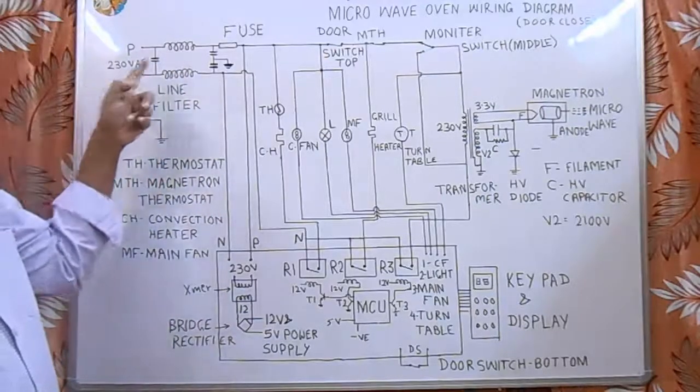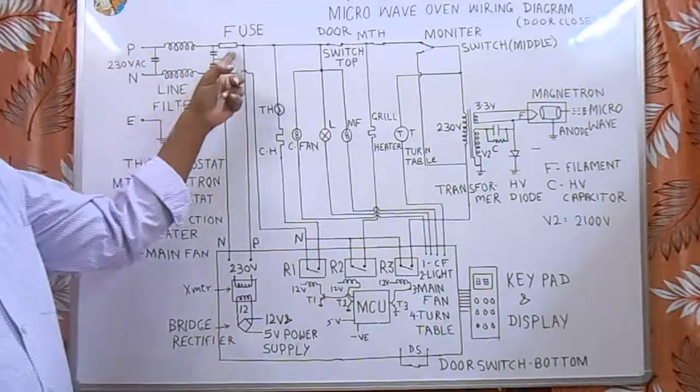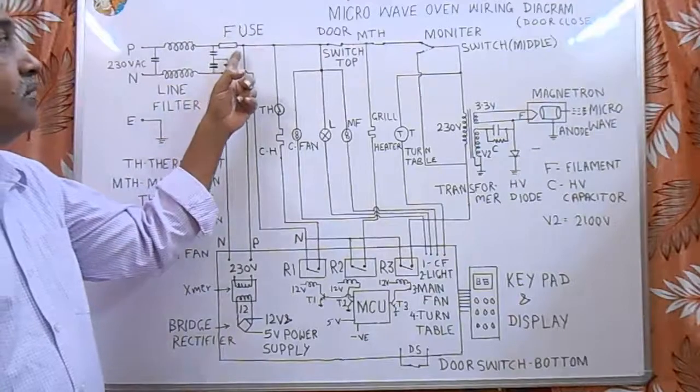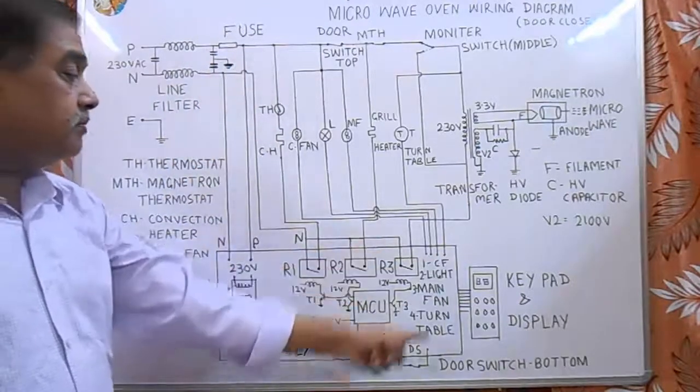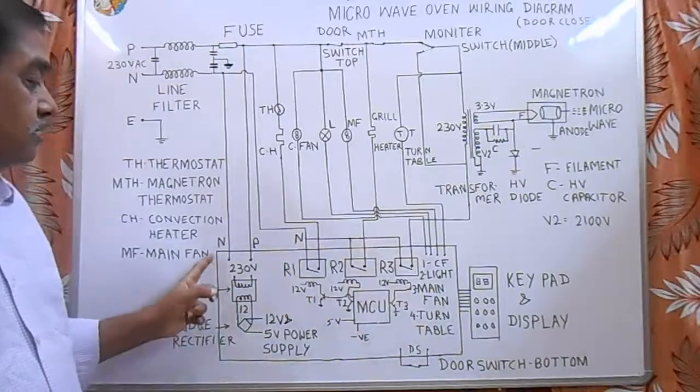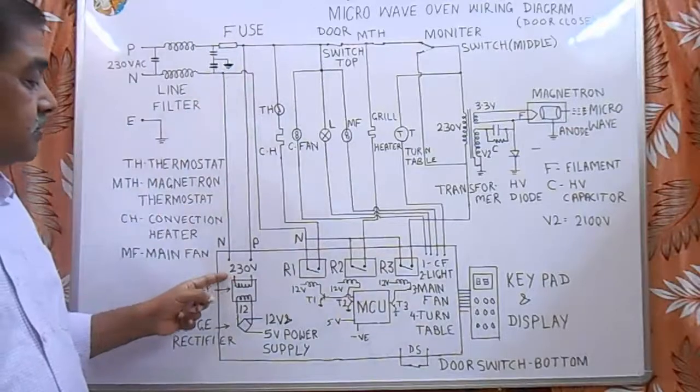Here we give 230 volt supply, and there are two coils and two capacitors, then a line fuse. From here, this supply goes to the main control PCB. The phase and neutral supply goes to this PCB.